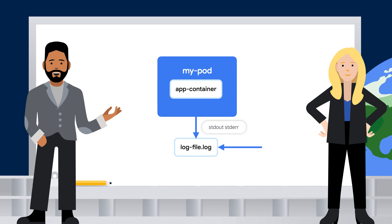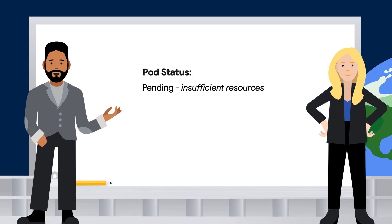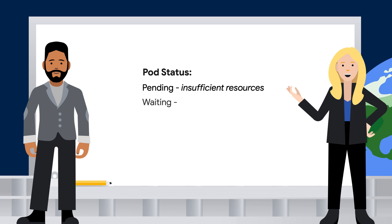Then I use the trusty kubectl describe to look at pod states and events. That's a great start. kubectl describe can tell you a lot. For instance, if a pod is pending, that could mean you have insufficient resources that prevent the pod from getting scheduled onto a node. So maybe in that case, I could delete another pod or create a new node to make space. Yeah, that might be a good way to handle it.